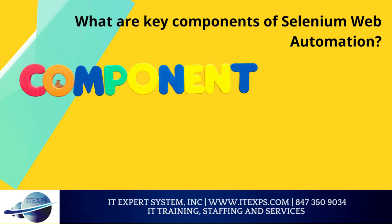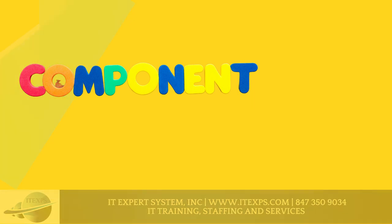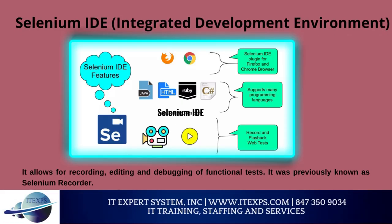What are the key components of Selenium web automation? Selenium has been in the industry for a long time and is used by automation testers all around the globe. The four major components of Selenium are: Selenium IDE, Selenium RC, Selenium WebDriver, and Selenium Grid. Selenium IDE — the integrated development environment — is the major tool in the Selenium suite. It is implemented as a Firefox add-on and as a Chrome extension, allowing for recording, editing, and debugging of functional tests. It was previously known as Selenium Recorder.